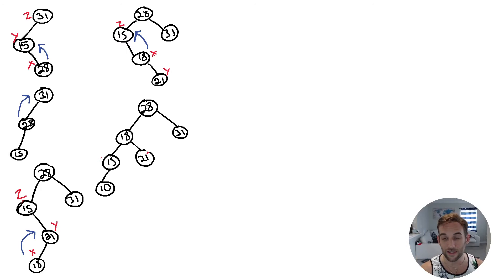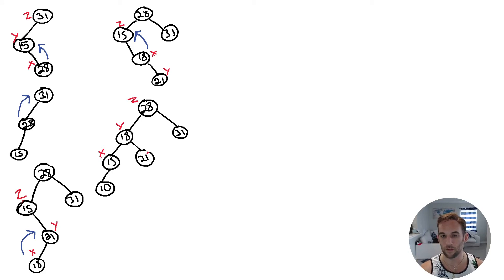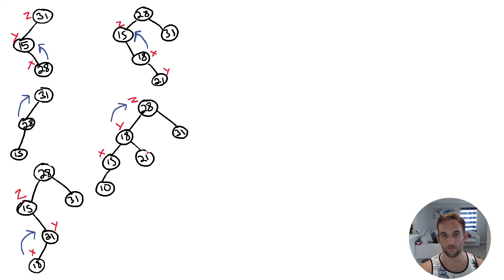So 28 is the first node that's not balanced — we label that Z. Then we go to the child with the greatest height, which is 18, and label that Y. Then we go to the next child with the greatest height, which is 15 — label that X. This is a straight line, left heavy, which only requires a single rotation — a right rotation because it's left heavy. If the balance factor is positive you do a right rotation; if negative, a left rotation.